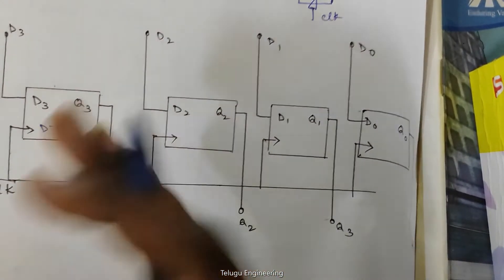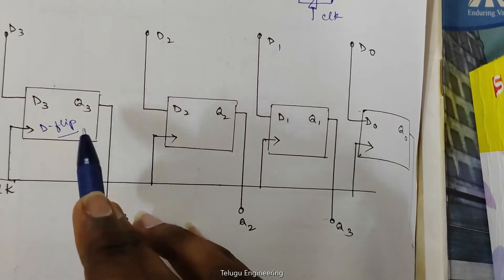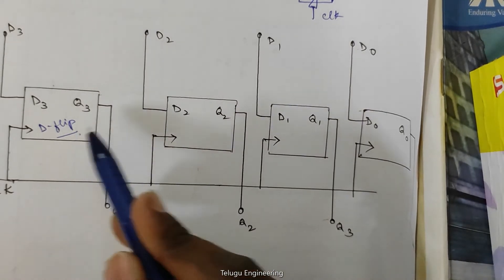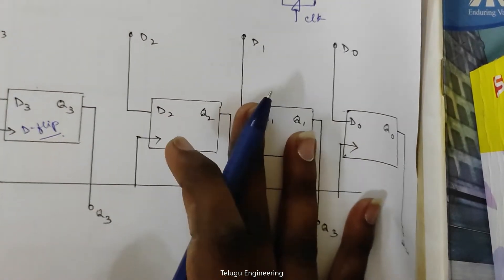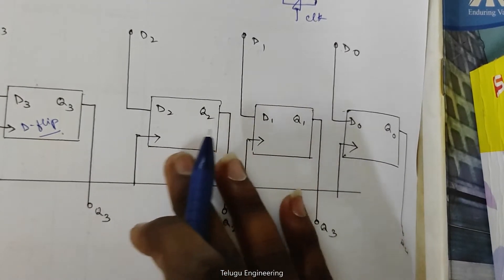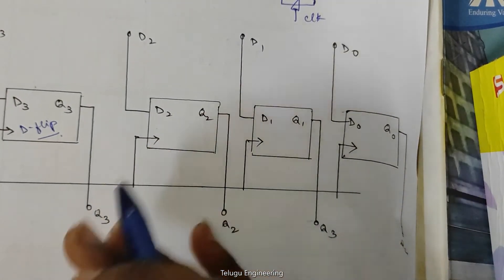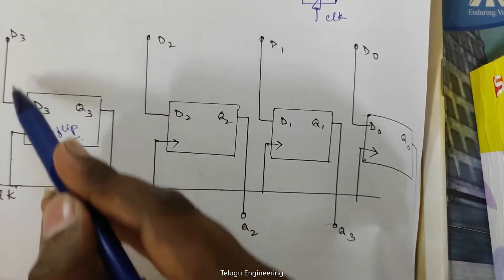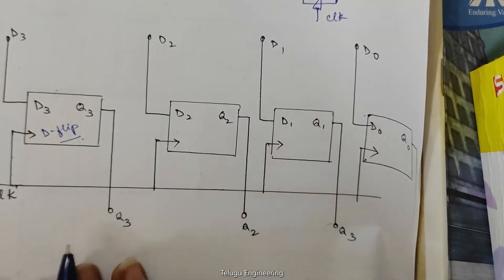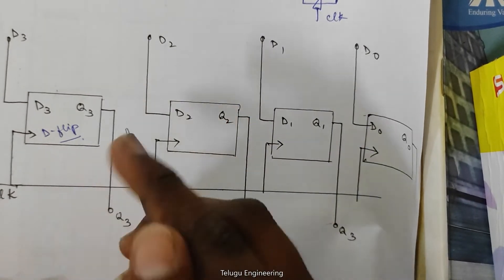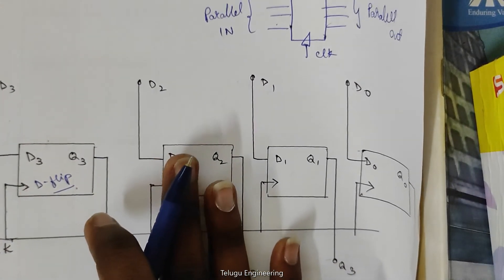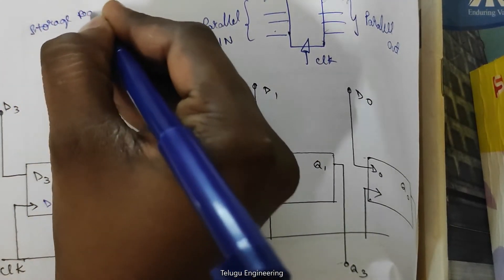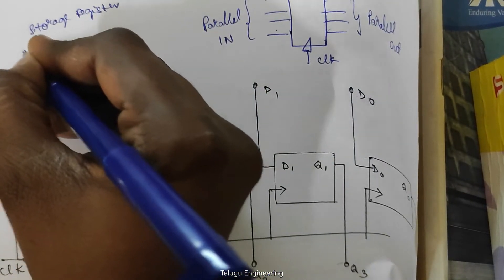We have used four D flip-flops and all of these are arranged in cascaded form. When cascading, the output of the first flip-flop is given as the input for the second flip-flop. So these four flip-flops are arranged in the form of cascading. Now let us see the basic operation. Whatever the data input that you give, you will get the output from Q3. Parallel Input Parallel Output is also known as a storage register.